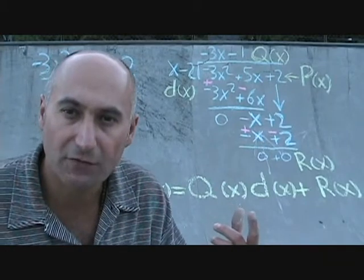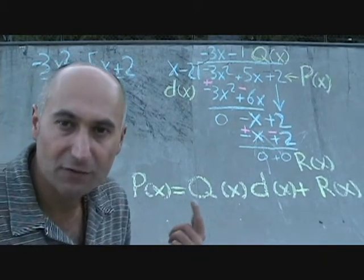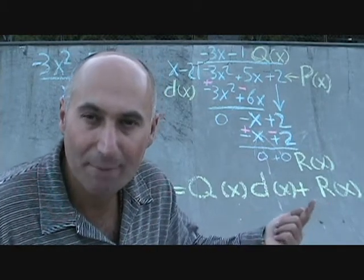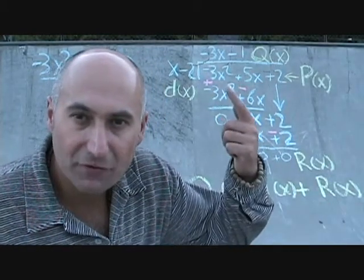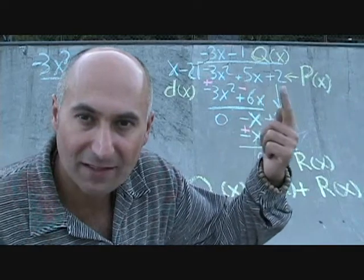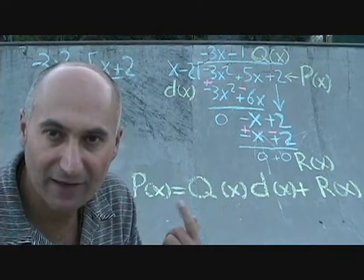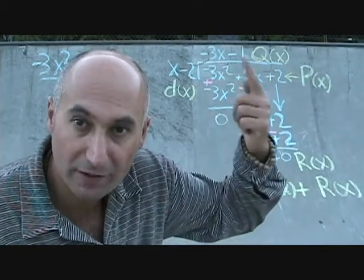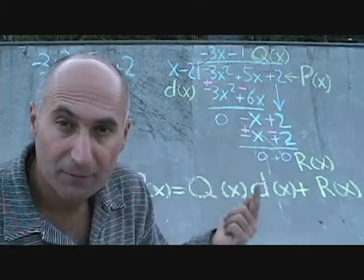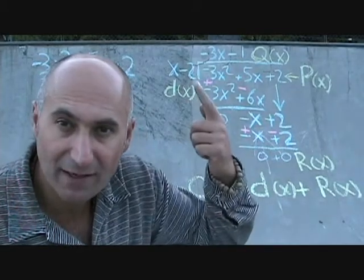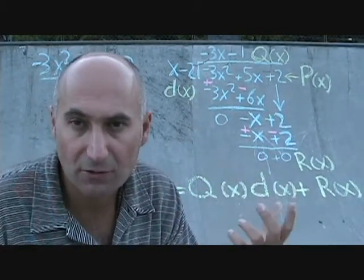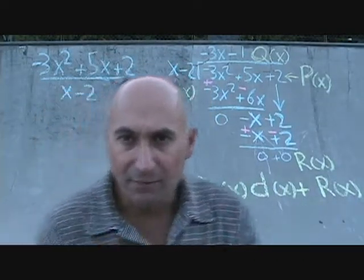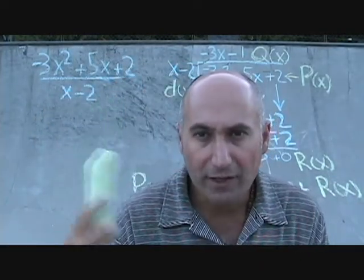Our division statement is: P of x equals Q of x times D of x plus R of x. So negative 3x squared plus 5x plus 2 equals the quotient we found, times x minus 2, plus zero. We now have our complete division statement, and the expression above can be written in the following factored form.